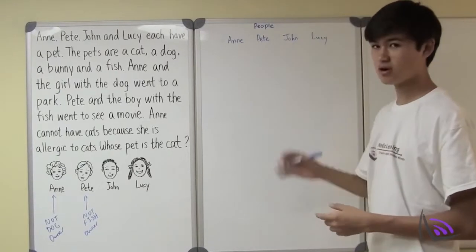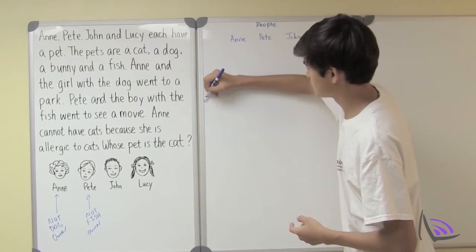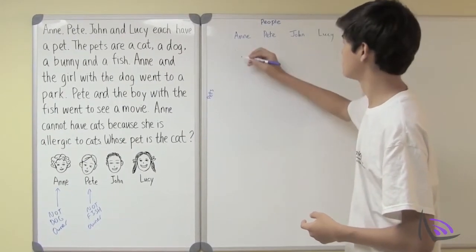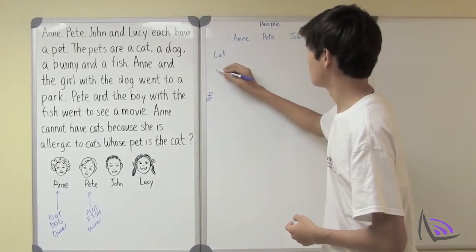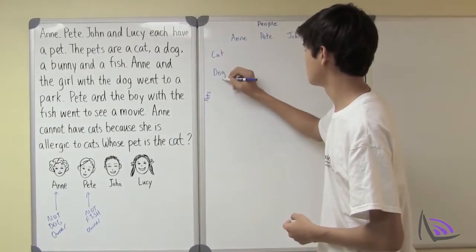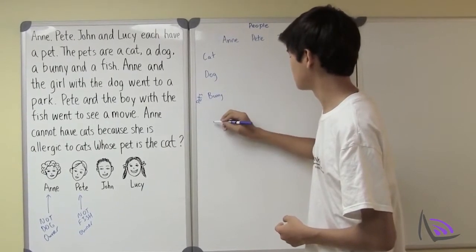Now since each of them owns one pet, we can go down and list out the pets. One is a cat, one is a dog, one is a bunny, and one is a fish.